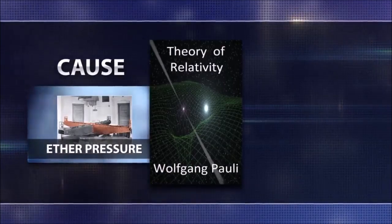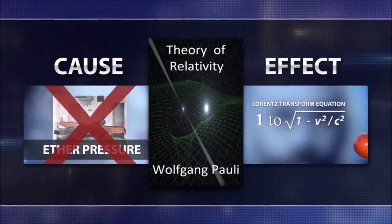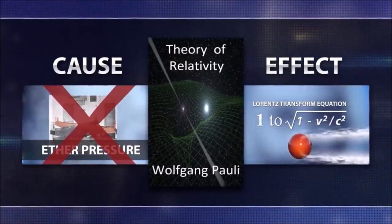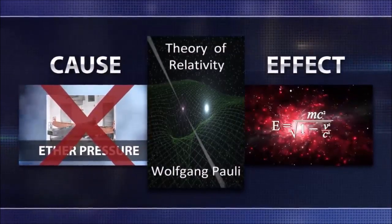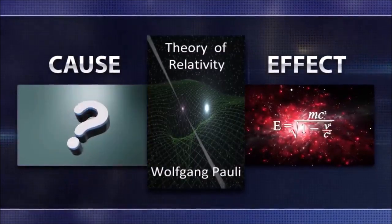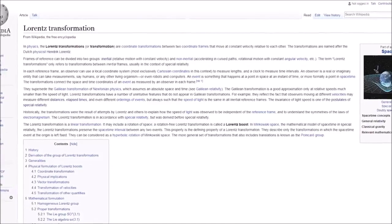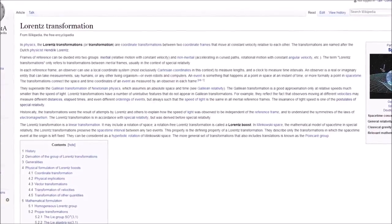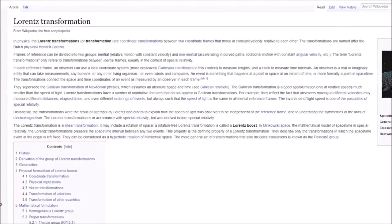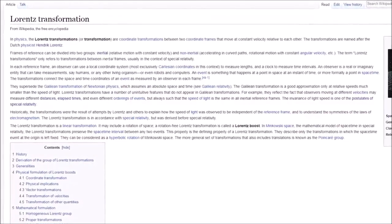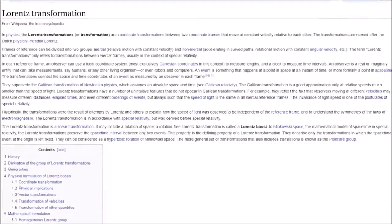So whatever the cause of the contraction, in order to give the ad hoc theory some semblance of credibility, the required amount for the metal enclosure to contract was put into a mathematical equation called the Lorentz transform. It has become the most famous and most used equation in modern physics. Essentially, whatever tests disagree with their belief that the earth was moving around the sun could now be mathematically transformed into their desired result, as well as give the semblance of being scientific.